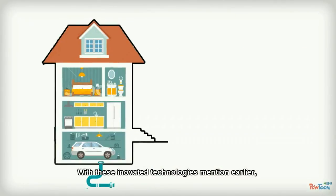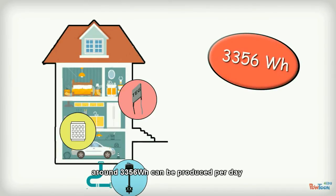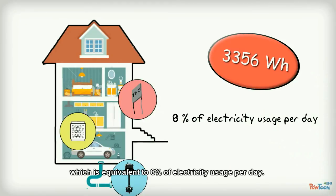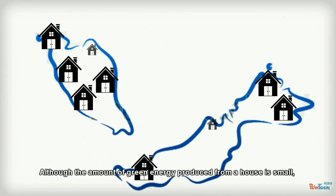With these innovative technologies mentioned earlier, around 3,356 watt-hours can be produced per day, which is equivalent to 8% of electricity usage per day. Although the amount of green energy produced from a house is small, if a lot of houses are using it, the total green energy produced will be very large.